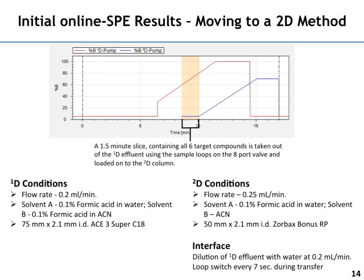The approach is shown here: the red line shows the solvent gradient through the first-dimension column. Under these conditions, all of our compounds elute in that highlighted window, so we basically take one large heart cut from that segment and transfer all of that fluid to the second-dimension column, then execute the next solvent gradient shown in blue. Both of these columns are reverse-phase columns, with slightly different chemistry to give a different elution order.